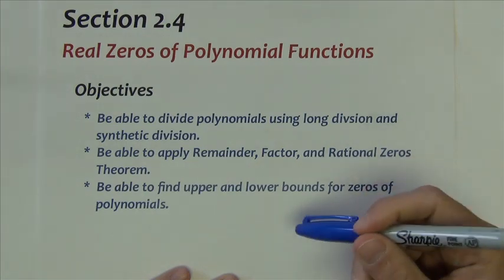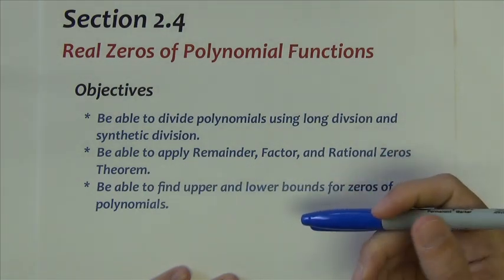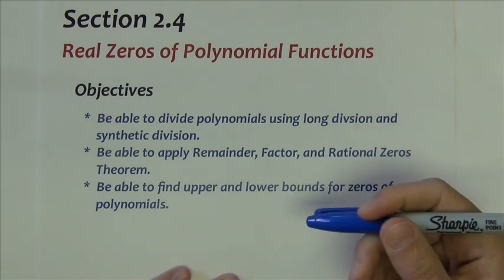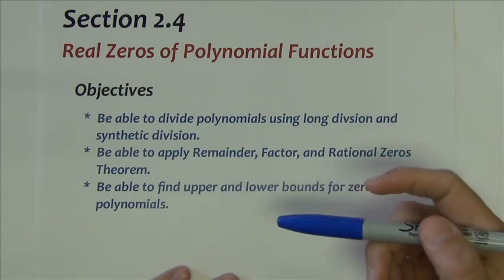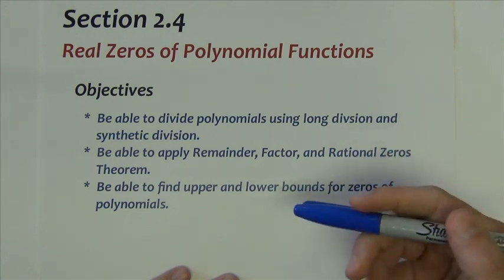In section 2.4 titled Real Zeros of Polynomial Functions, we're going to start to get down to the business of how do we find zeros when traditional factoring techniques don't work.